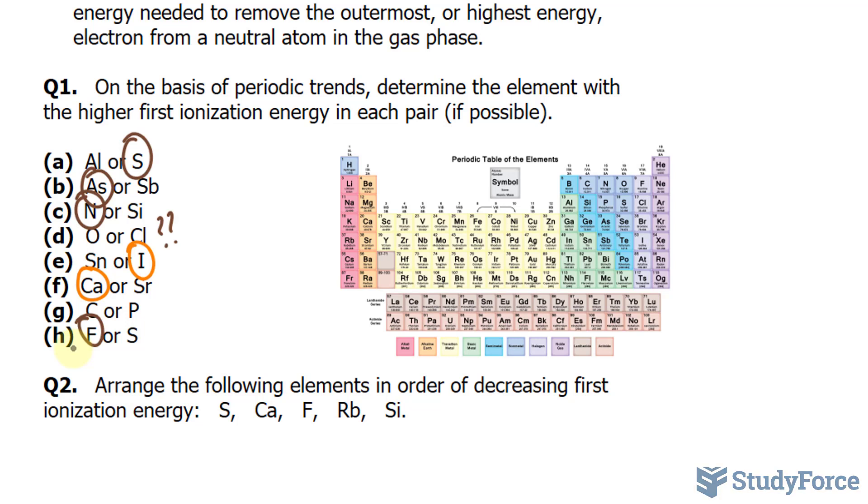In question number two, we have to arrange the following elements in order of decreasing ionization energy, from highest to lowest. We'll start by locating where these are on the periodic table.